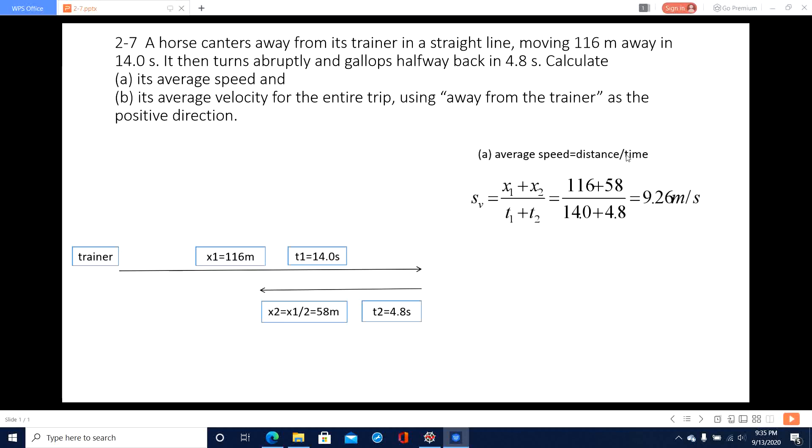Speed is distance divided by time taken: x1 plus x2 divided by t1 plus t2. This x1 plus x2 is how much length it covered, the distance it covered. And then the average velocity is displacement divided by time taken.